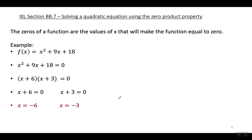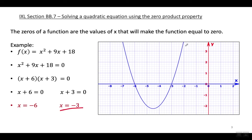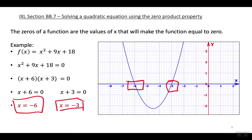The most important thing to understand is this: when I graph this function, these are the two X-intercepts. The zeros are telling us where the graph intersects the X-axis. The graph of this quadratic function intersects the X-axis at X equals negative three and at X equals negative six.